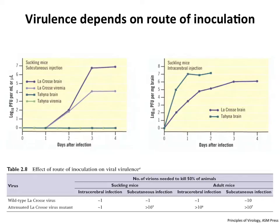Here's an example of virulence depending on how you inoculate virus into the animal. These are two bunyaviruses: La Crosse virus and Tahyna virus. In suckling mice inoculated subcutaneously, La Crosse virus makes a nice viremia and also replicates in the brain — it's quite neurovirulent. But Tahyna virus does not cause viremia, does not get into the brain, and is not virulent. However, if you put both viruses directly into the brain, they both replicate and are both virulent. So the route of inoculation is critically important.